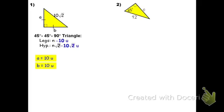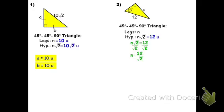Even though the picture looks like one side might be longer, this is a 45-45-90 triangle — I go with what it tells me, not what the picture looks like. They gave the hypotenuse, so I solve for n. Dividing by root 2 gives n equals 12 over root 2. We never leave a radical in the denominator, so we rationalize: multiply top and bottom by root 2, getting 12 root 2 over 2. Dividing gives n equals 6 root 2. C is a leg, so C is 6 root 2 units.